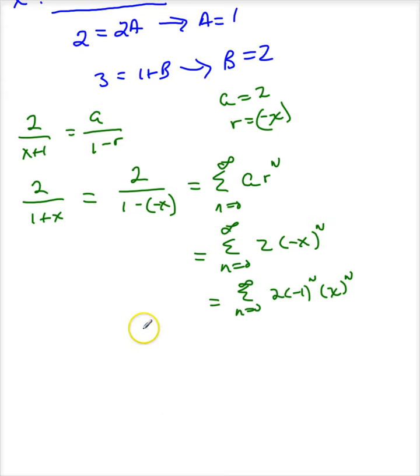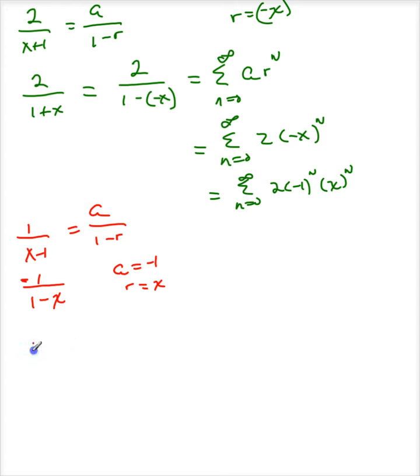Next, let me go to my second fraction, which is 1 divided by x minus 1. Now remember, I want to put this in the form a divided by 1 minus r. So I'm going to put this as 1 divided by, now I need a positive 1 in the numerator. So what if I factor a negative out of this? I can write this as negative 1 times 1 minus x. So as soon as I do this, I see that a is negative 1 and r is x. So I can write 1 divided by x minus 1 as the sum as n goes from 0 to infinity of a, r to the n.